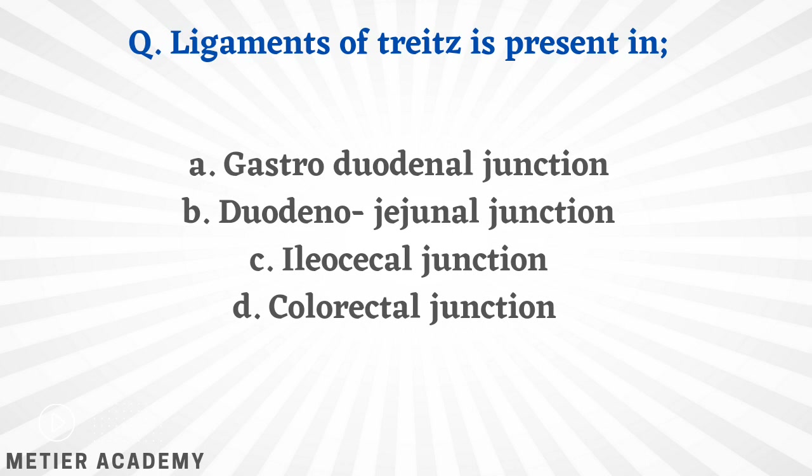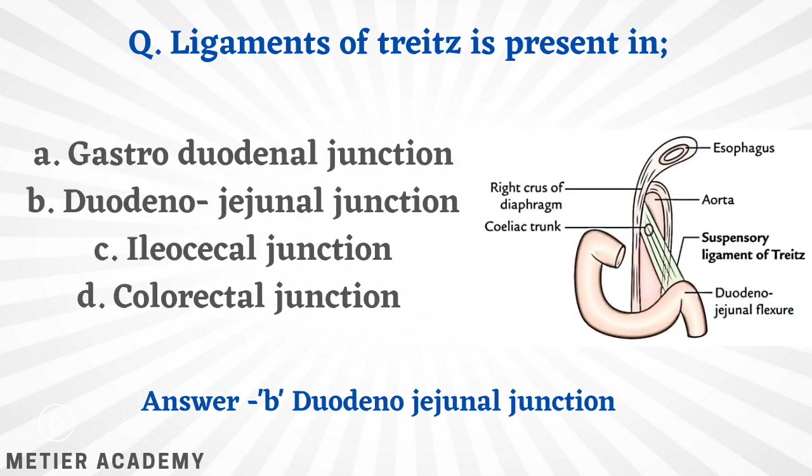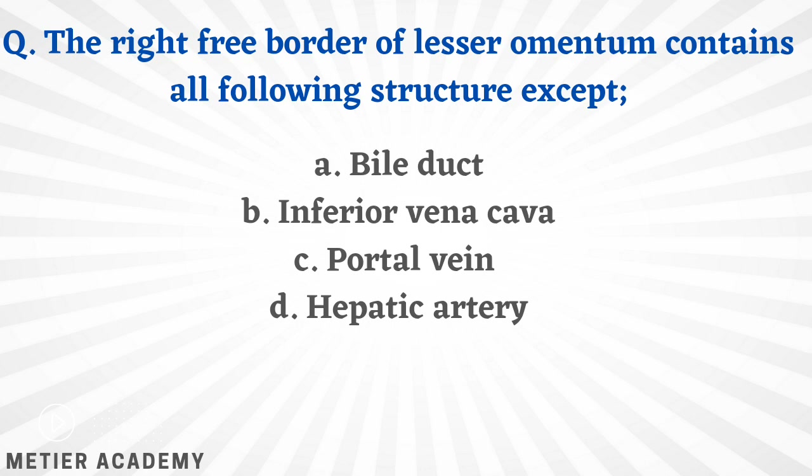The next question: the ligament of Treitz is present at which junction? Options are gastroduodenal junction, duodenojejunal junction, ileocecal junction, or colorectal junction. The correct answer is option B, duodenojejunal junction. You can see in the image that these ligaments are present at the duodenojejunal junction.